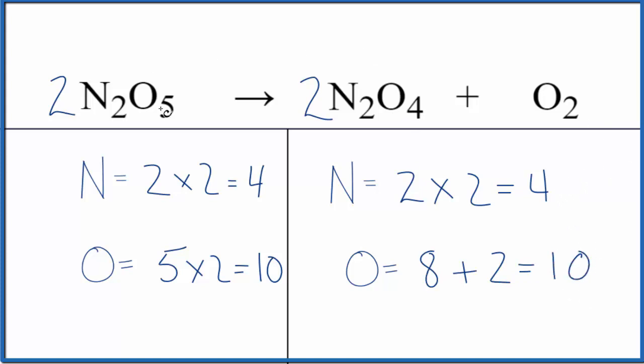If you wanted to write the states, at room temperature, this dinitrogen pentoxide would be a solid. We'd have a gas at room temperature for N2O4, and oxygen is a gas as well. So those are the states, and both of these are very interesting compounds.